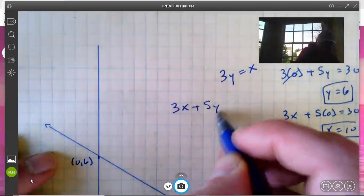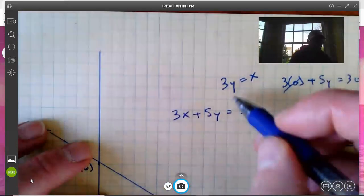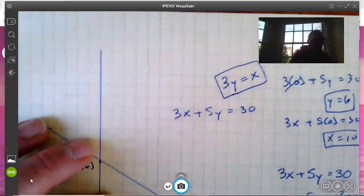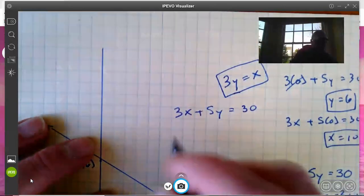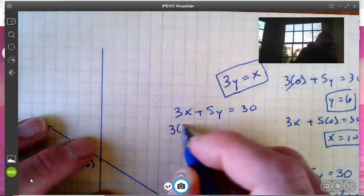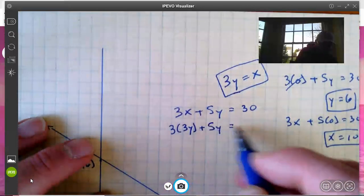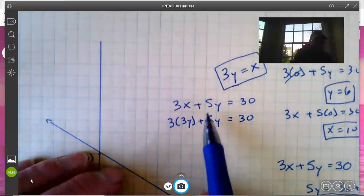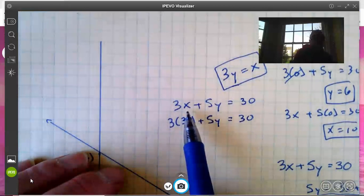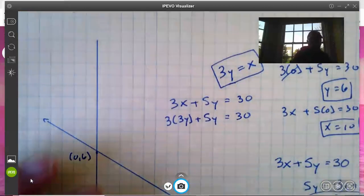And we could think of this as a systems of equations problem where I'm just going to substitute 3y for x. So 3(3y) + 5y = 30. Since I know that x should be equal to 3y, I'll just replace x with 3y, solve for y and see what we get.